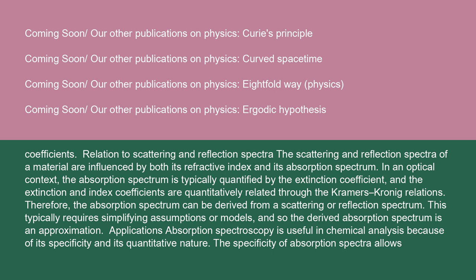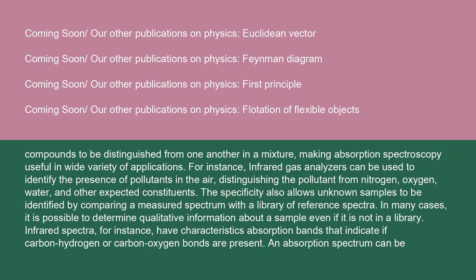Absorption spectroscopy is useful in chemical analysis because of its specificity and its quantitative nature. The specificity of absorption spectra allows compounds to be distinguished from one another in a mixture, making absorption spectroscopy useful in a wide variety of applications. For instance, infrared gas analyzers can be used to identify the presence of pollutants in the air, distinguishing the pollutant from nitrogen, oxygen, water, and other expected constituents. The specificity also allows unknown samples to be identified by comparing a measured spectrum with a library of reference spectra. In many cases, it is possible to determine qualitative information about a sample even if it is not in a library. Infrared spectra, for instance, have characteristic absorption bands that indicate if carbon-hydrogen or carbon-oxygen bonds are present.